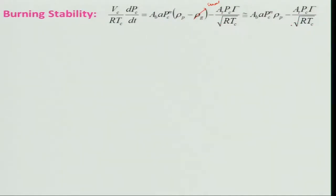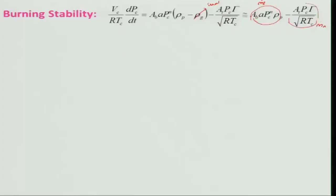Having neglected rho_G, one term represents mass passing through the nozzle and the other is mass being generated. Whenever there is an imbalance between the mass flow rates, you will get accumulation of mass resulting in an increase in pressure, or vice versa — if there is a decrease, mass is depleted and pressure decreases. We now look at mass flow rate generated (a function of chamber pressure) versus mass flow rate through the nozzle (also a function of chamber pressure).